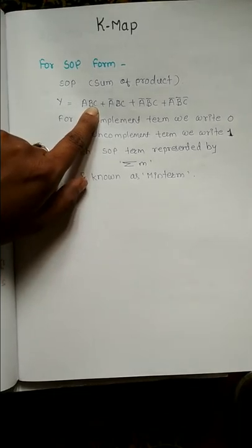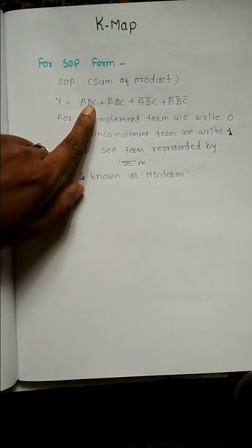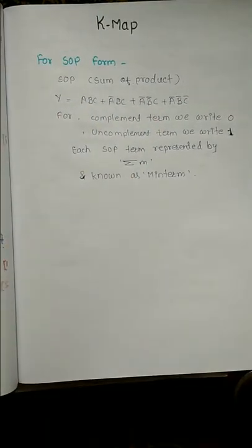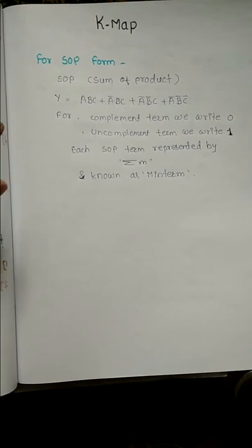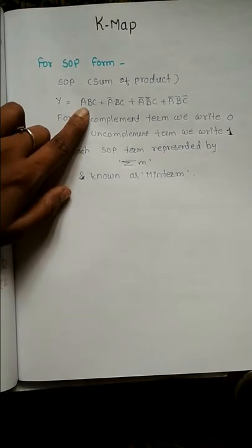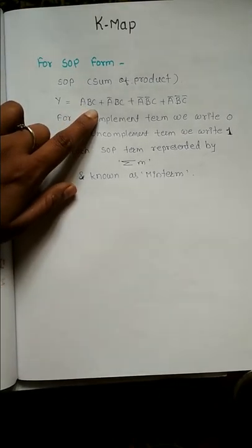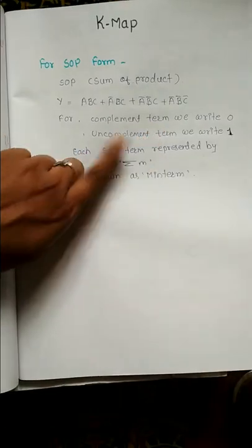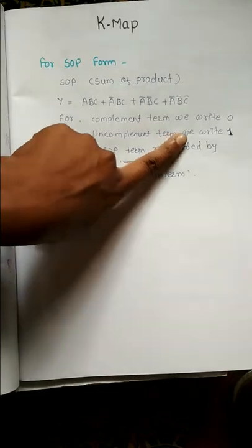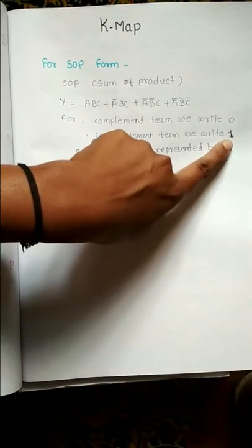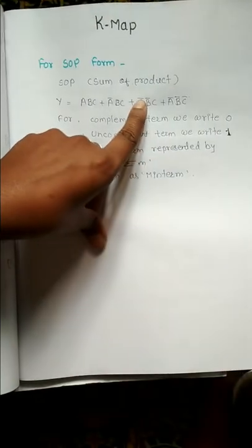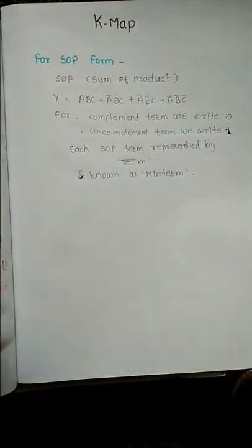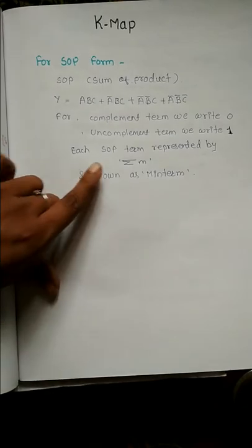For SOP form, whenever a normal term is there, we consider it as one. That is, uncomplemented term we write as one. And whenever a bar is present, that is complement term, we write as zero. SOP forms are represented by summation of M, it is known as minterm.